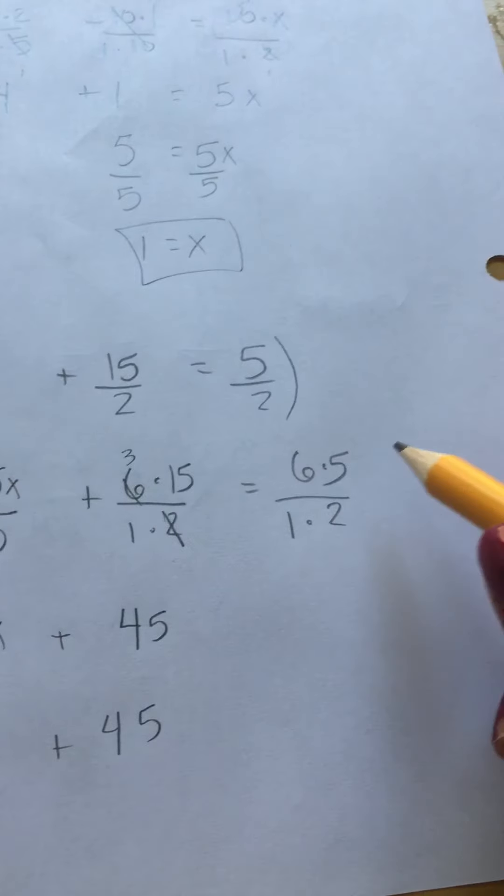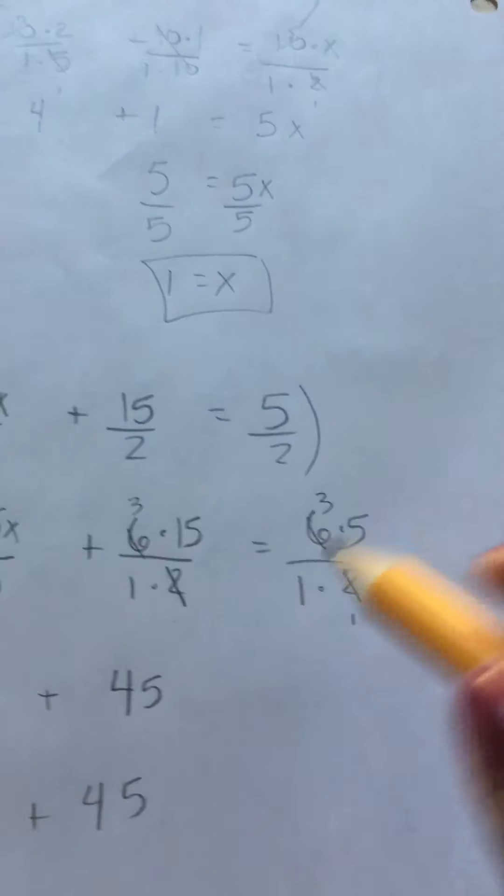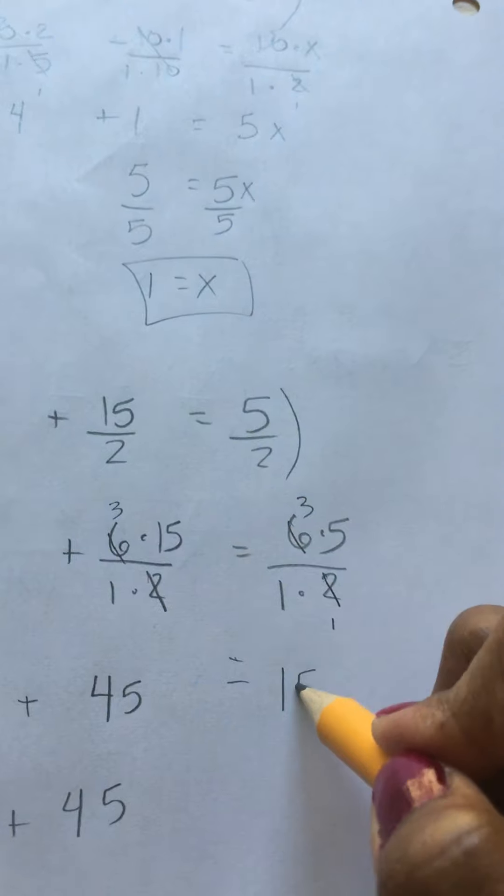Alright, plus 45. I don't know why I did it that way. And the 2 and the 6, they reduce. That becomes a 3. 3 times 5 is 15. So that's 15.